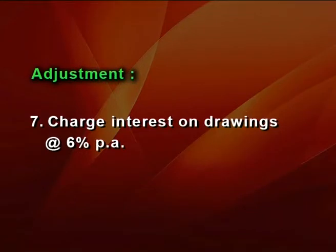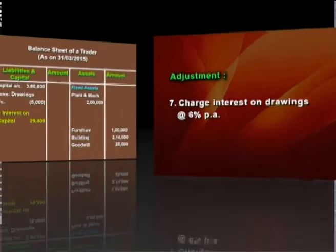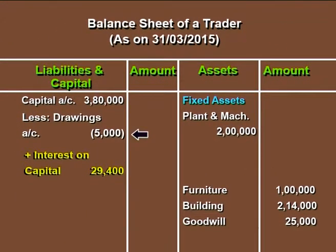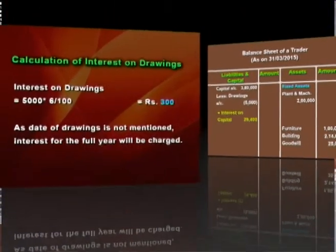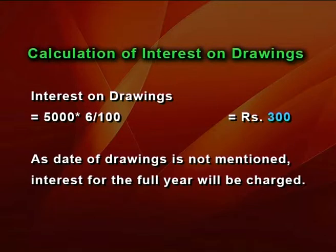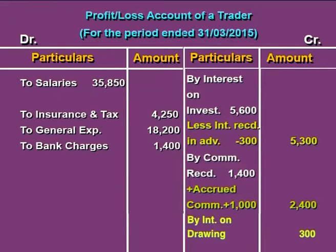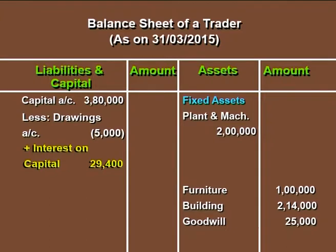Moving to the next: interest on drawings charged at the rate of 6 percent per annum. Drawings are Rs 5,000 and there is no information on when drawings are made, so we assume interest for the full year. Interest of 6% on Rs 5,000 for full year is Rs 300. Interest on drawings is an income for the business, so it appears on the credit side of the profit or loss account. The second effect: it is adjusted in capital by deducting it, just like drawings.